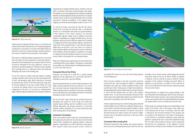Flaps are used during most approaches since they tend to have a stabilizing effect on the airplane; the degree to which flaps are extended varies with the airplane's handling characteristics as well as the wind velocity. Generally, the roundout is made like a normal landing approach but the application of crosswind correction is continued as necessary to prevent drifting. Since the airspeed decreases as the roundout progresses, the flight controls gradually become less effective. When using the wing-low method, it is necessary to gradually increase the deflection of the rudder and ailerons to maintain the proper amount of drift correction. Do not level the wings — keep the upwind wing down throughout the roundout. The primary objective is to land the airplane without subjecting it to any side loads that result from touching down while drifting.